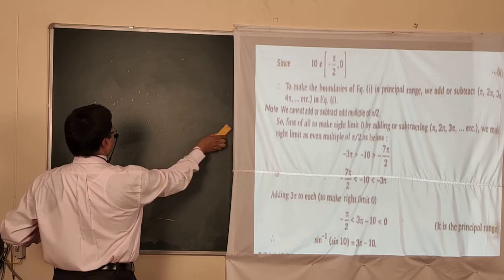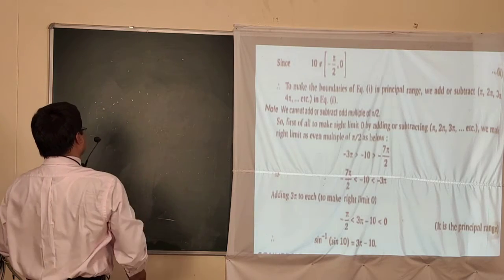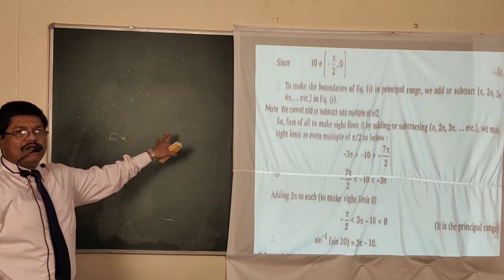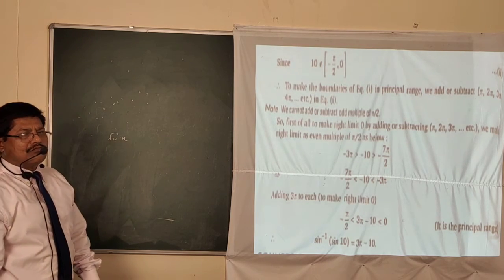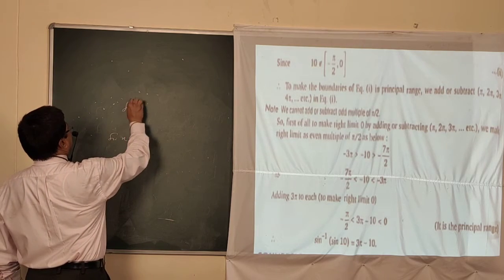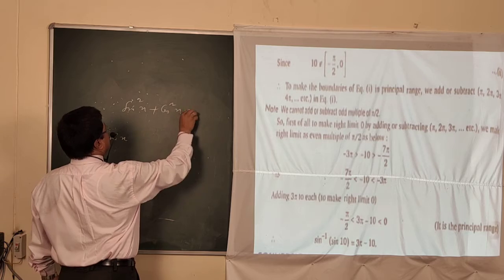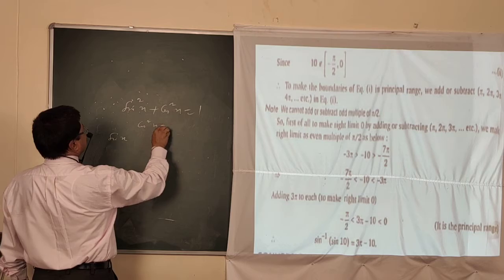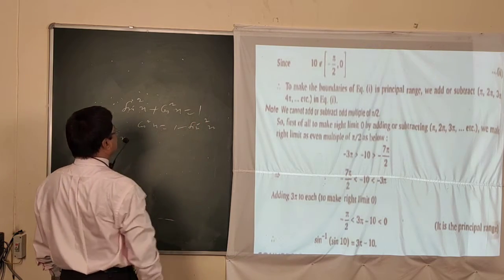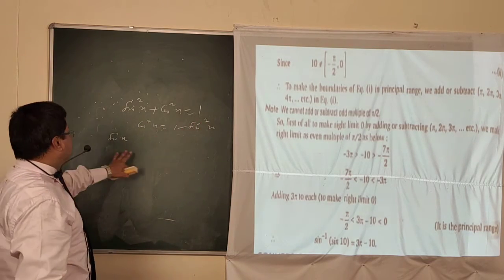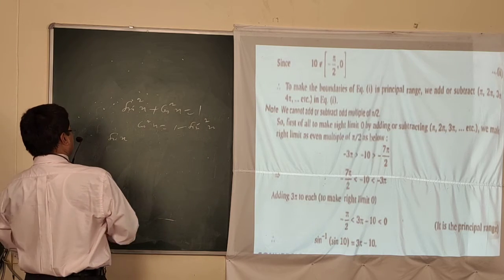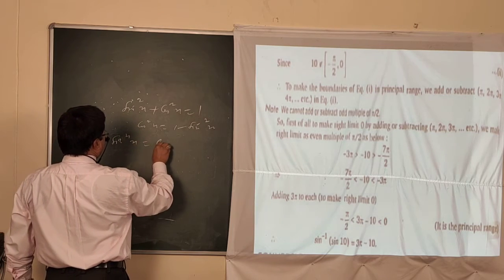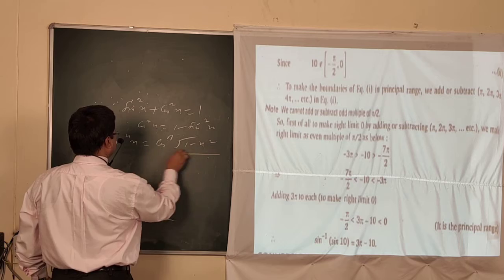The formula is: sin⁻¹x = cos⁻¹(√(1-x²)). To prove this, let sin⁻¹x = y, so x = sin y. Converting sin y using the identity: sin y = √(1 - cos²y). So x equals √(1 - cos²y).